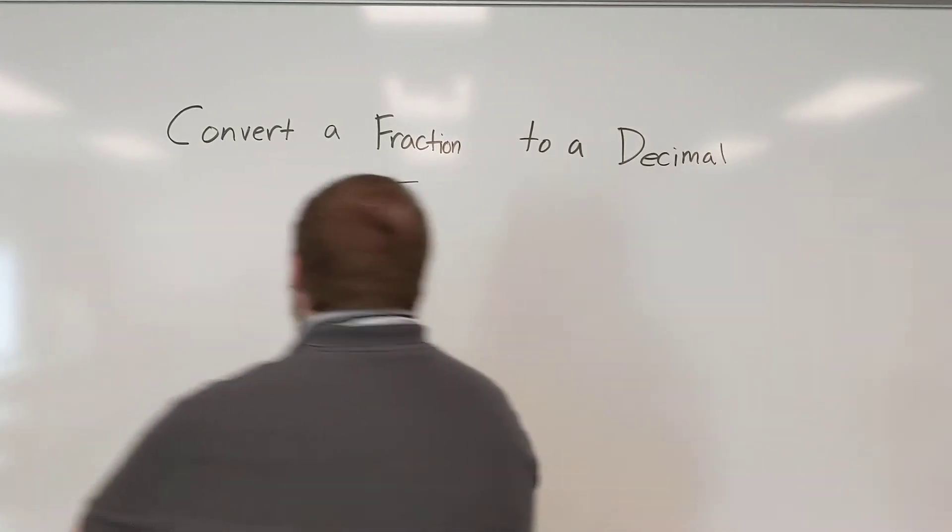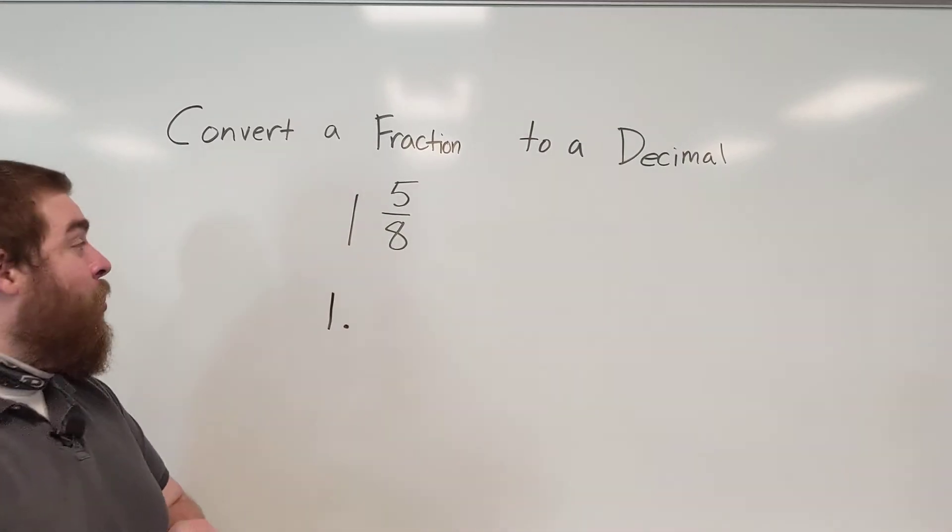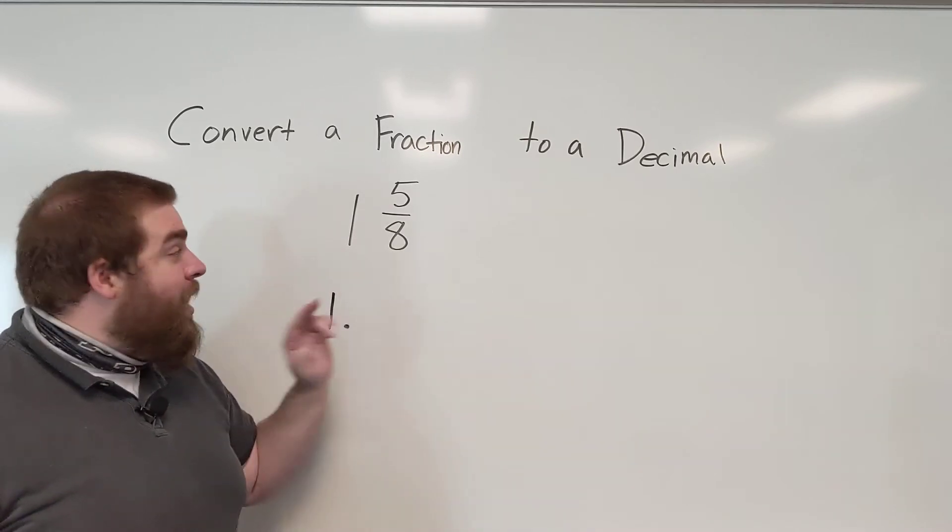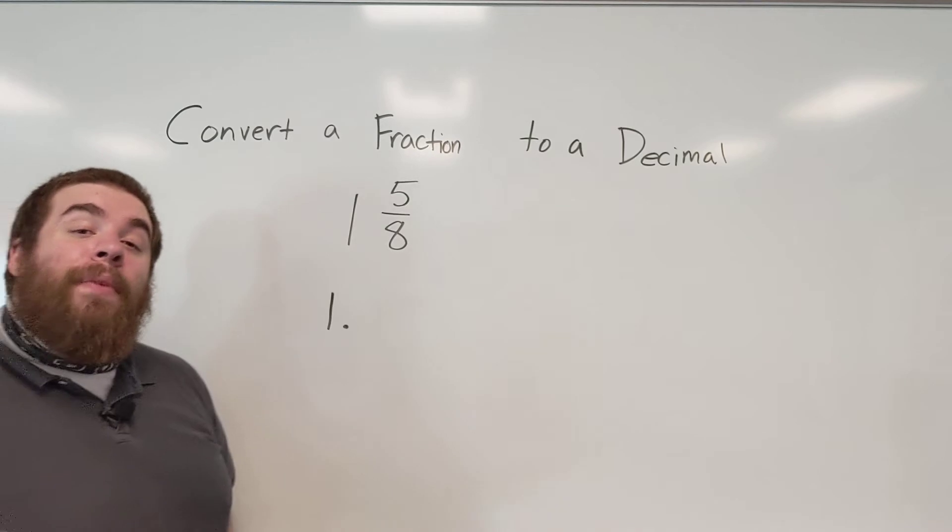So no matter what, this one will always be to the left of our decimal point and it will never change. Now we're looking at saying how can we convert 5 eighths into a decimal. Let me show you how to do this.